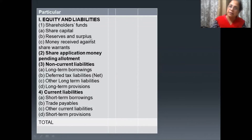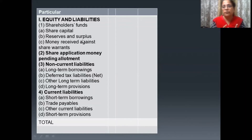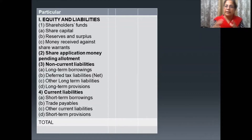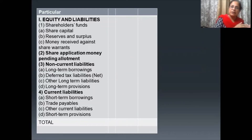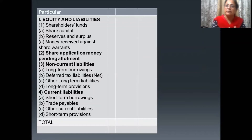Next we will write Reserves and Surplus. These reserves and surplus are the accumulated profit which is not meant for distribution as dividend. The company keeps accumulating some part of the profit — that is called surplus and reserve. It means some amount is kept aside for the future. I will explain this in detail later.